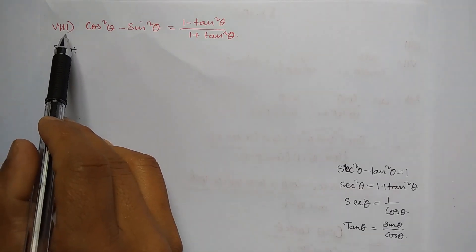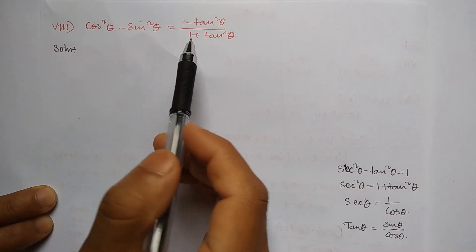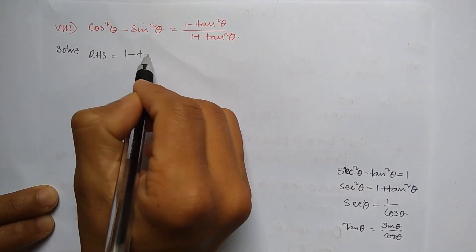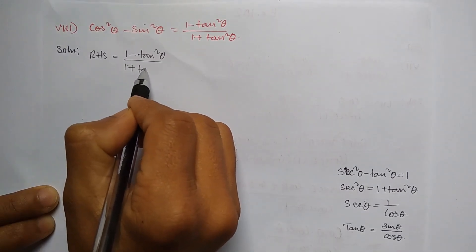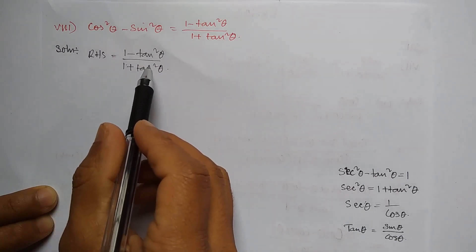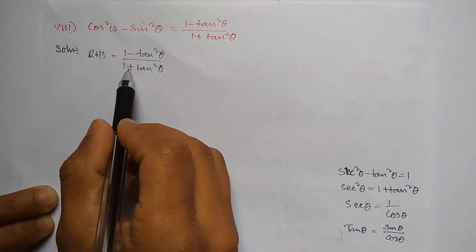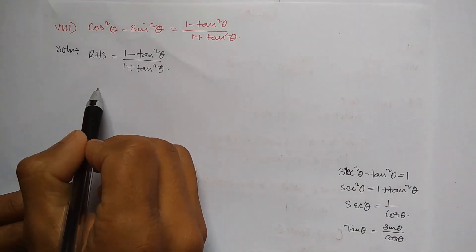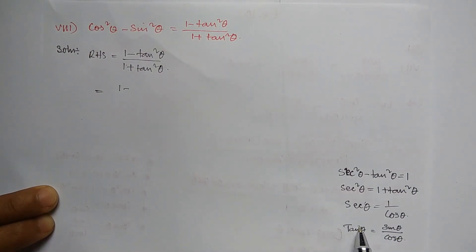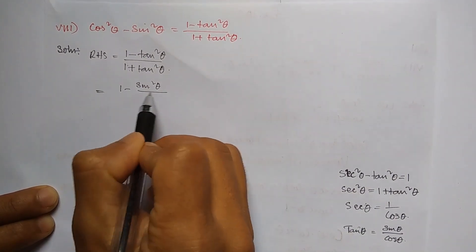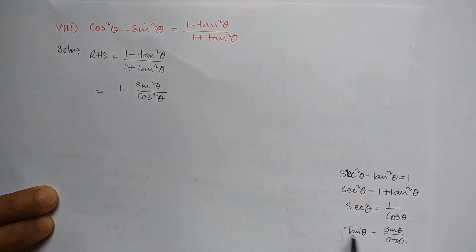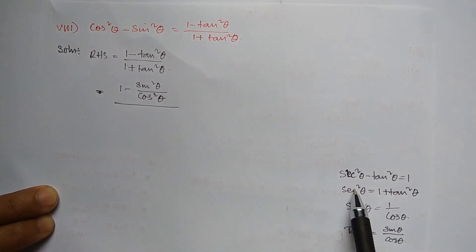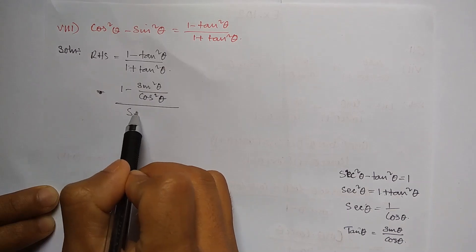Question number 8. We need to prove left hand side equals right hand side. The right hand side is 1 minus tan square theta by 1 plus tan square theta. The formula for 1 plus tan square theta is sec square theta — that is the fundamental identity: sec squared theta equals 1 plus tan squared theta.